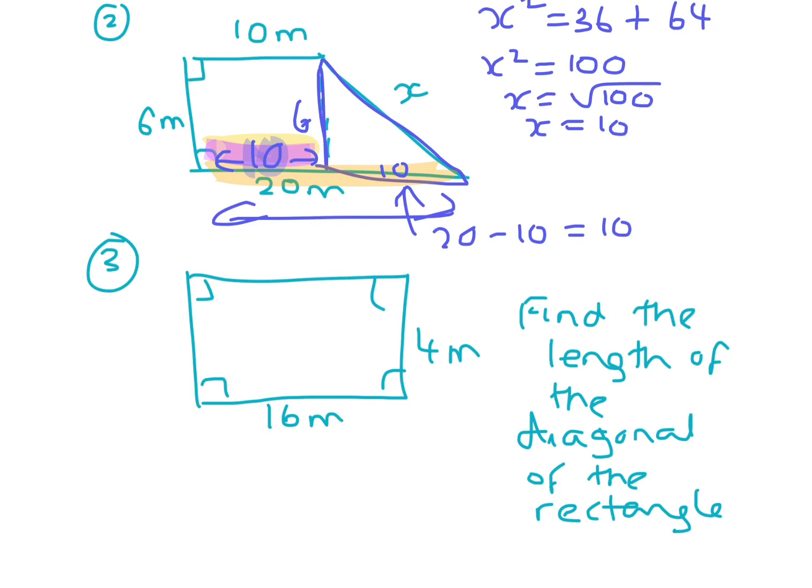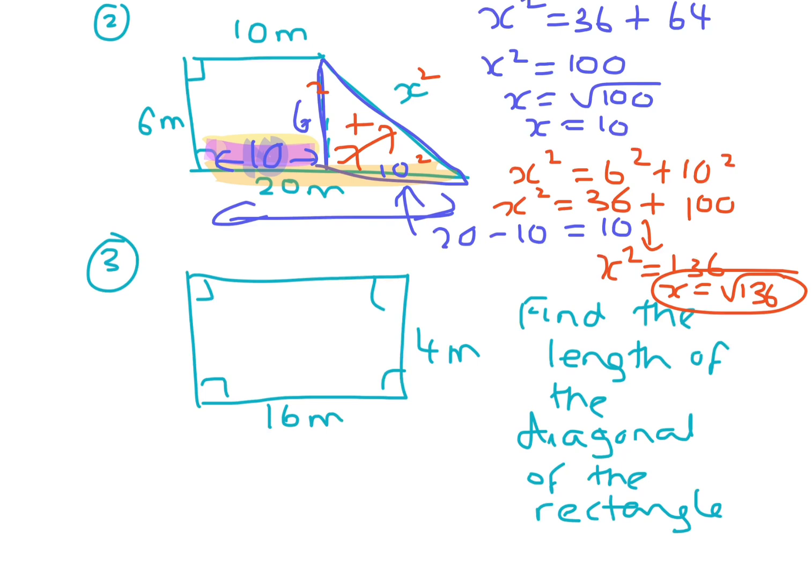So that means that X squared equals, because it's going to find the hypotenuse, X squared is 6 squared plus 10 squared. So X squared equals 36 plus 100. So X squared is 136. Square root your answer, and we'll just leave it in the exact form, or as a surd.